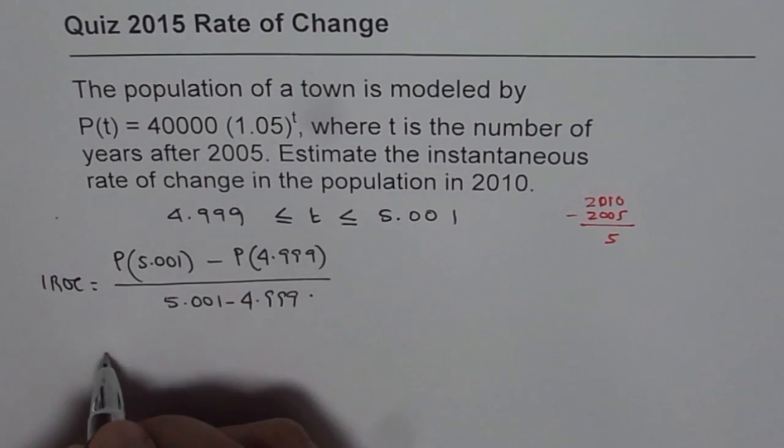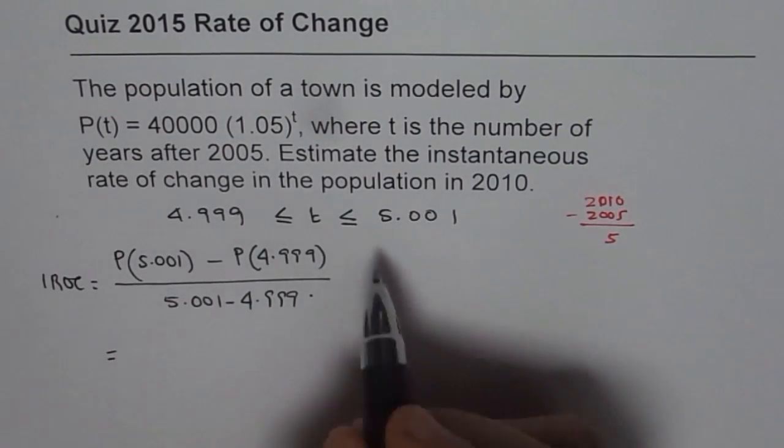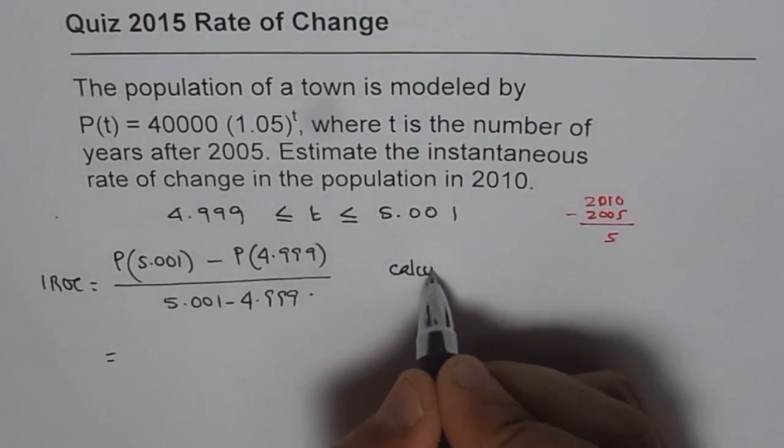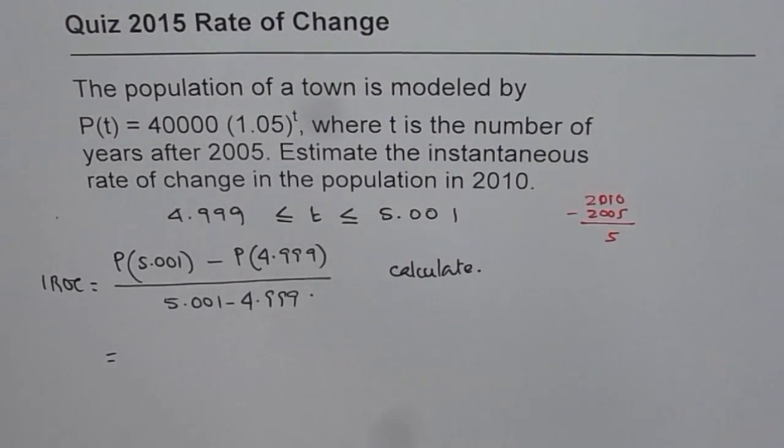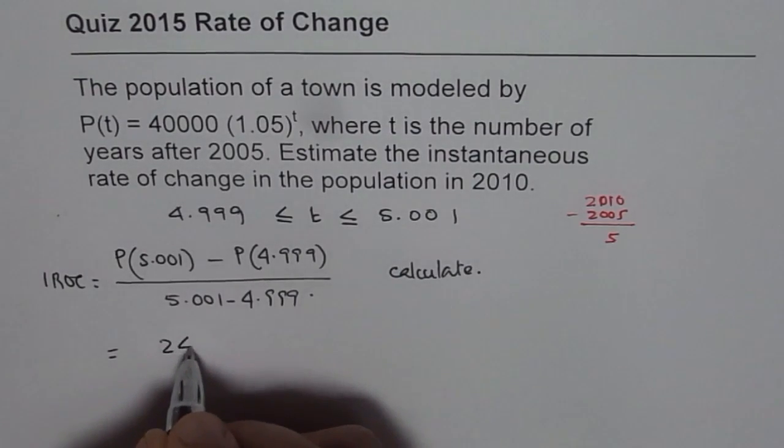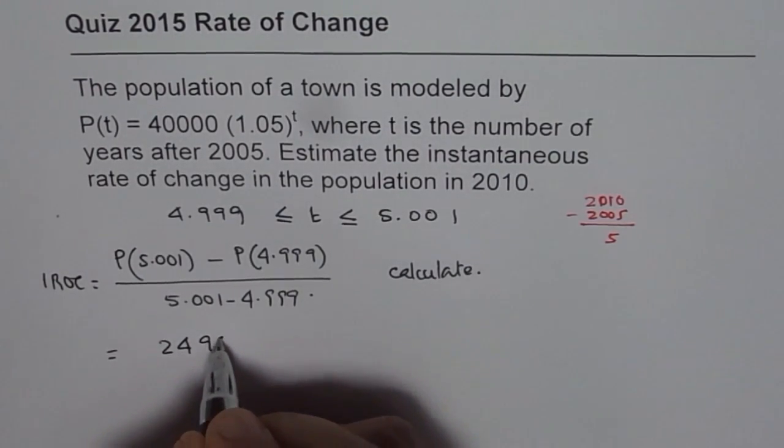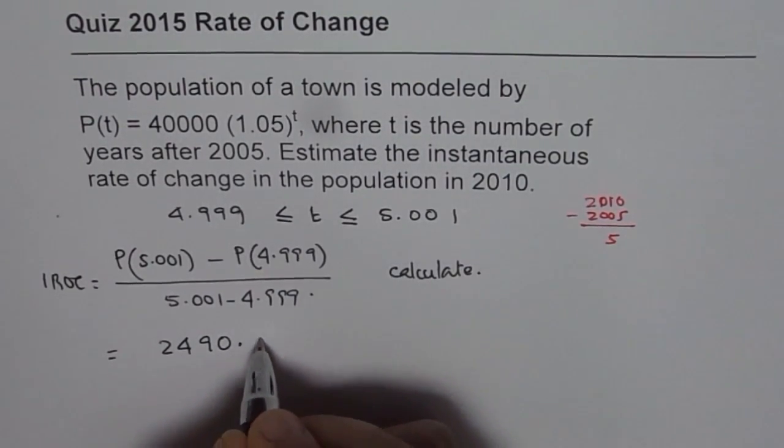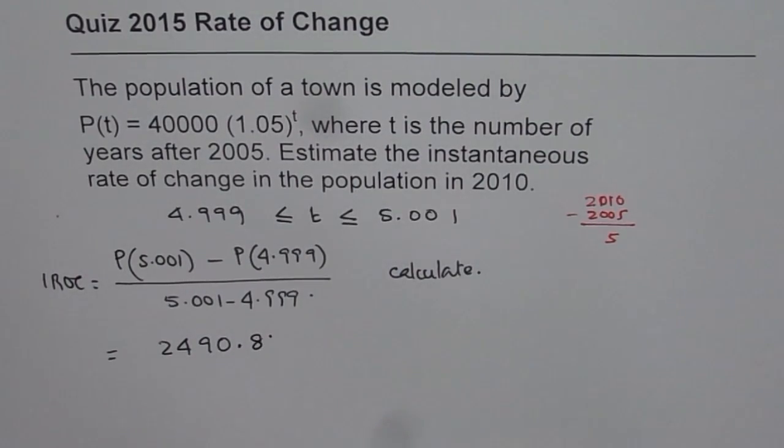you will get, let me write down a value here. So you calculate. The idea is what mistakes we should not do. Once you calculate, you get a value which is approximately 2490.8, something like that.